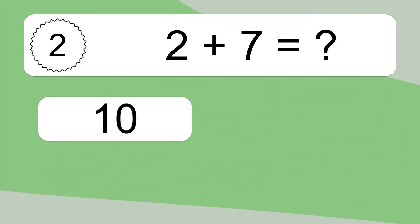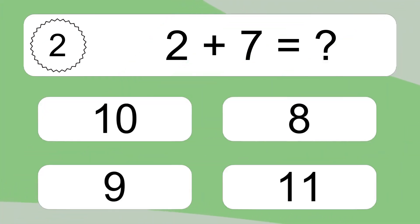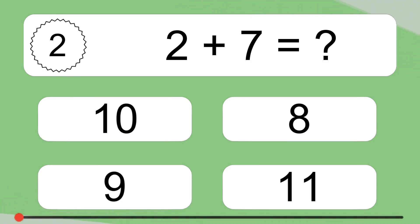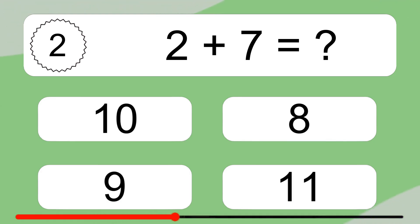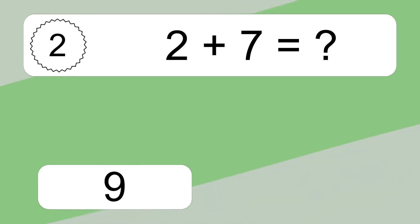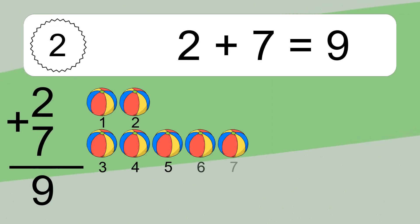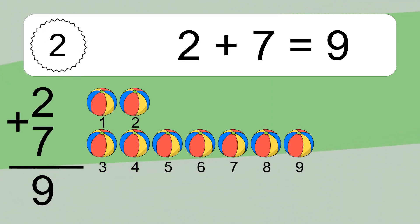2 plus 7 equals what? 2 plus 7 equals 9.